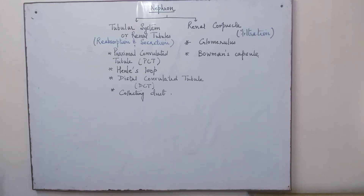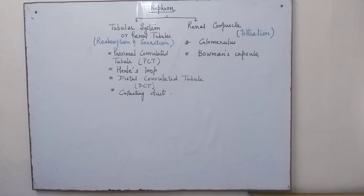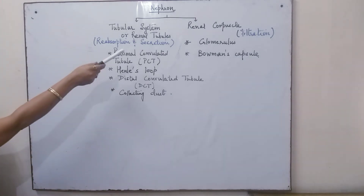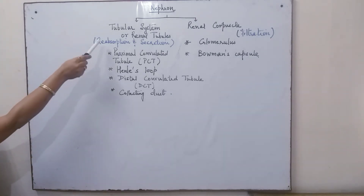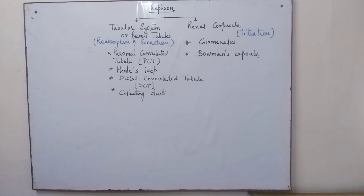This video will explain the nephron complete system. In the previous video we studied the structure and working of the nephrons — the different parts and how they function. Now going further in detail, we find that the nephron system, which is the filtering unit, has two major parts: the renal corpuscle and the tubular system or the renal tubules.